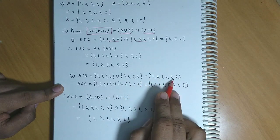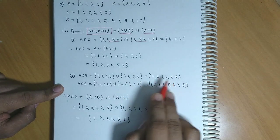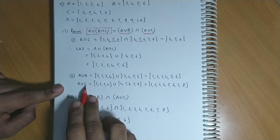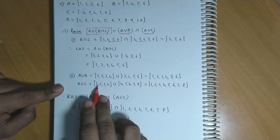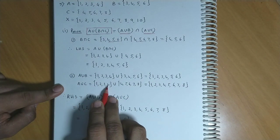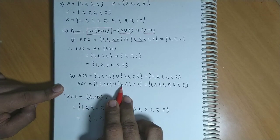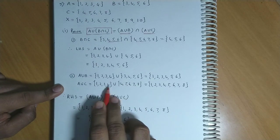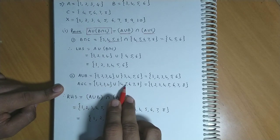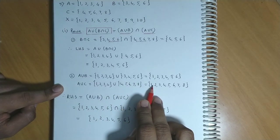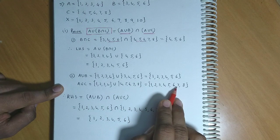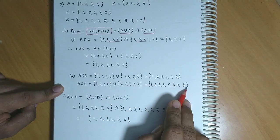Ab aise hi A union C. Toh union aayega {1, 2, 3, 4} and {4, 5, 6, 7, 8}. Toh agar hameh union karte hai, we get {1, 2, 3, 4, 5, 6, 7, 8}.